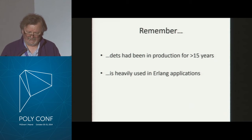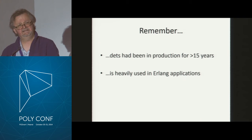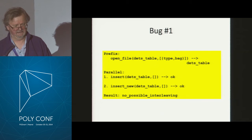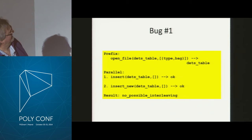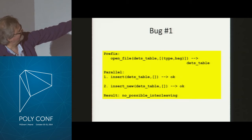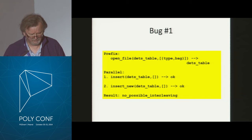This is a core part of the database you get with Erlang — it had been in production more than 15 years when I started testing, and it's heavily used in Erlang applications. I wrote a QuickCheck model, began running tests, corrected a few misconceptions on my part, and finally got a sequential model that matched the implementation. Then I ran parallel tests and immediately found a problem. First we opened the file, then in parallel we inserted an empty list of tuples — a no-op — and called insert_new to insert another empty list — another no-op. They both returned okay. But QuickCheck says there's no way to explain this using the model.